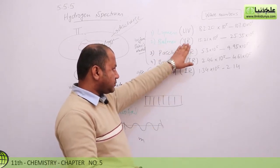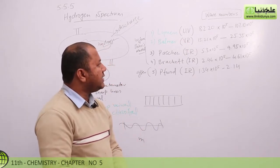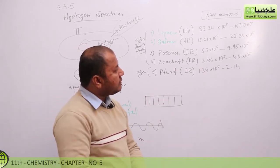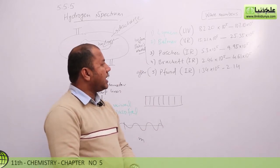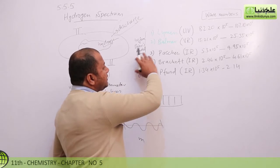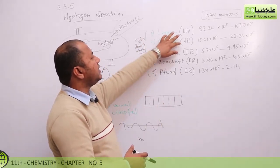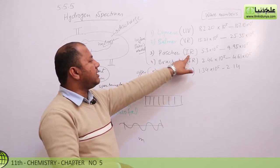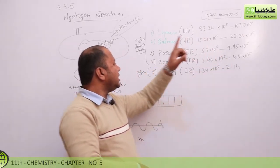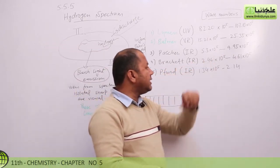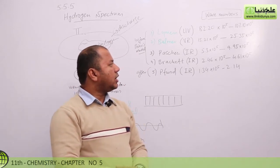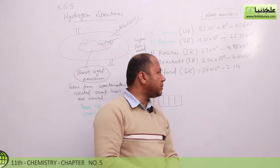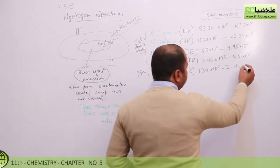After that, Balmer has also studied it. Balmer has seen that the waves are 15.2 into 10 to the power 5 and 25.3 into 10 to the power 5 waves per meter. It has worked on ultraviolet region and visible region. It has also worked on infrared region and calculated 2.46 into 10 to the power 5 to 4.6 into 10 to the power 5. Pfund also calculated 1.74 into 10 to the power 5 to 2.14 into 10 to the power 5.